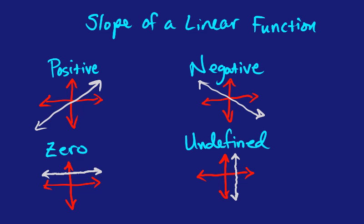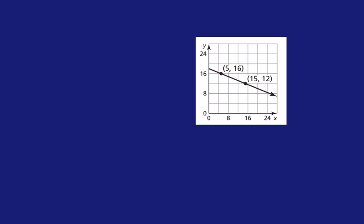The first graphic we have is a graph with a negative slope — we can tell because it's going down from left to right — and you've been given two points. Anytime you've been given two points, there are two things you can do to find slope, and I'll talk about each way.